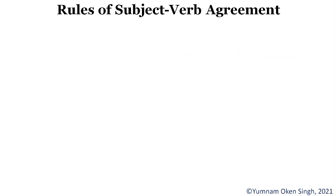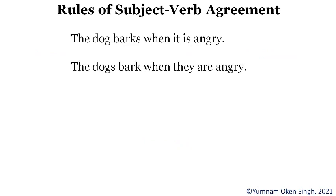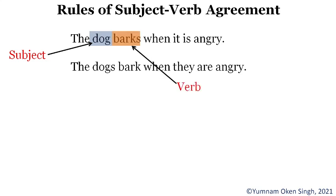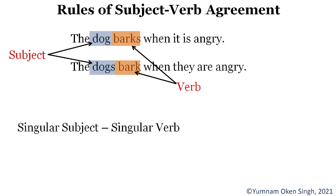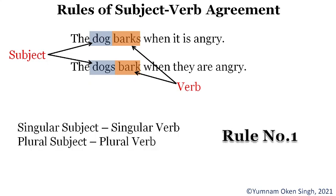Now let's come to the rules. Observing these two sentences: in the first sentence the subject is 'the dark dog,' which is singular, so it takes a singular verb. In the second sentence the subject is 'dogs,' which is plural, so it takes a plural verb. From this, singular subjects take singular verbs and plural subjects take plural verbs. This is Rule Number One.